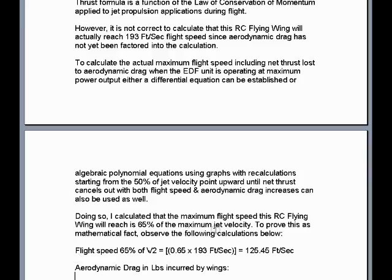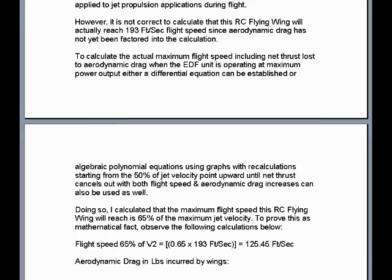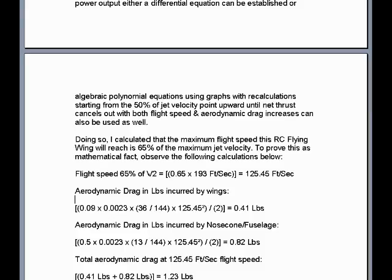Doing so, I calculated that the maximum flight speed this RC flying wing will reach is 65% of the maximum jet velocity. To prove this as mathematical fact, observe the following calculations. We take a flight speed of 65% of the jet velocity, so 0.65 times 193 feet per second jet velocity, to equal a top flight speed of 125.45 feet per second.